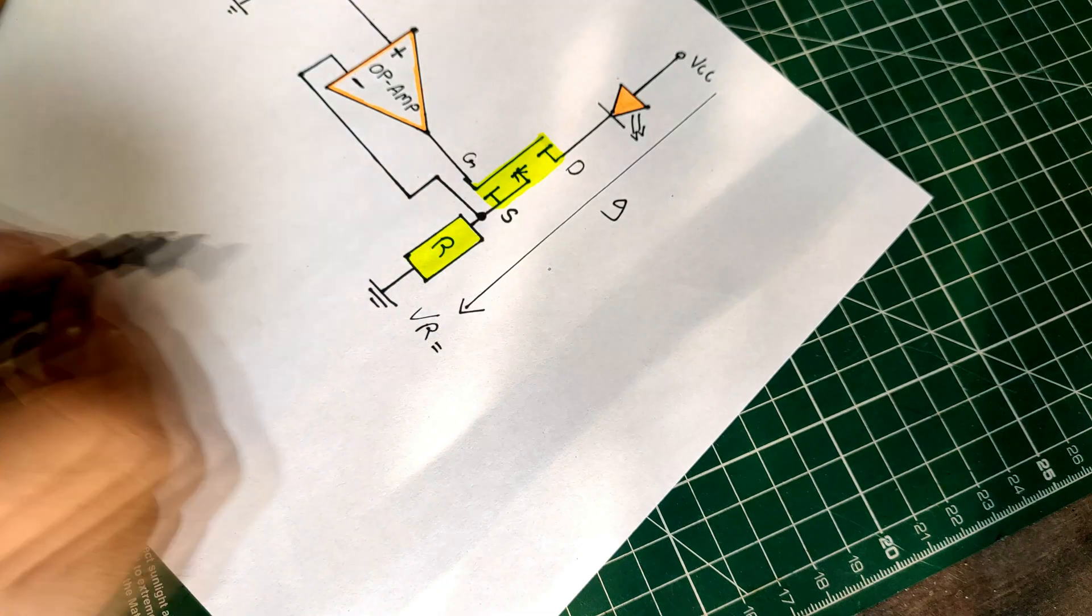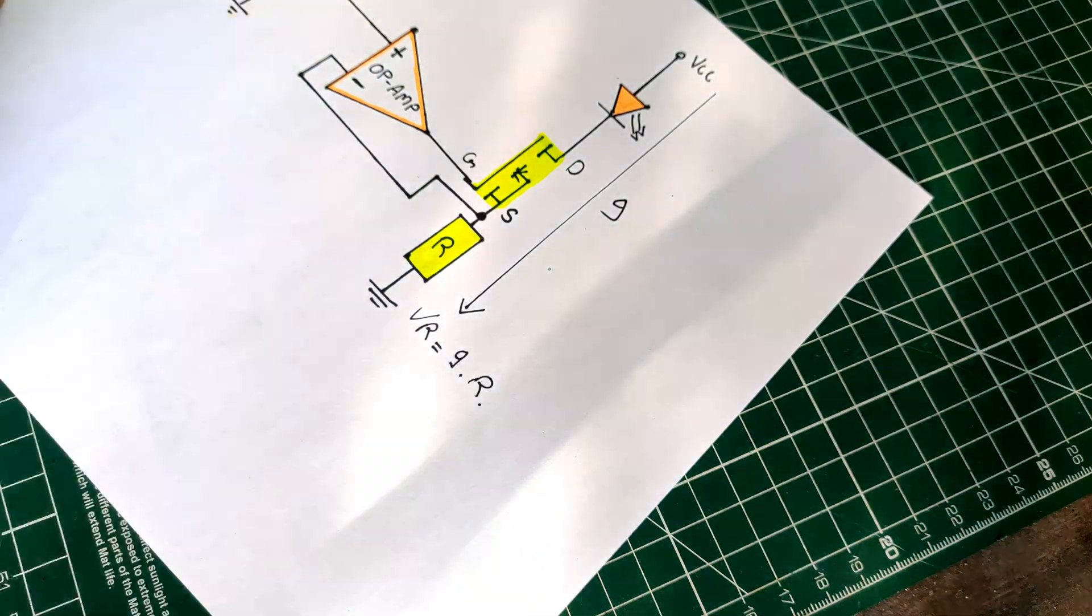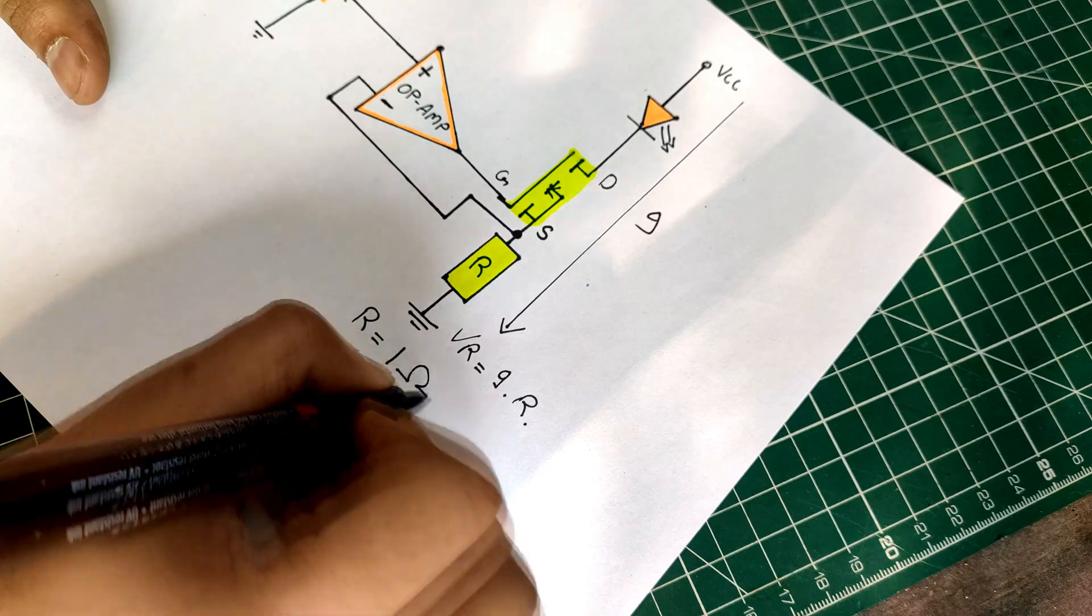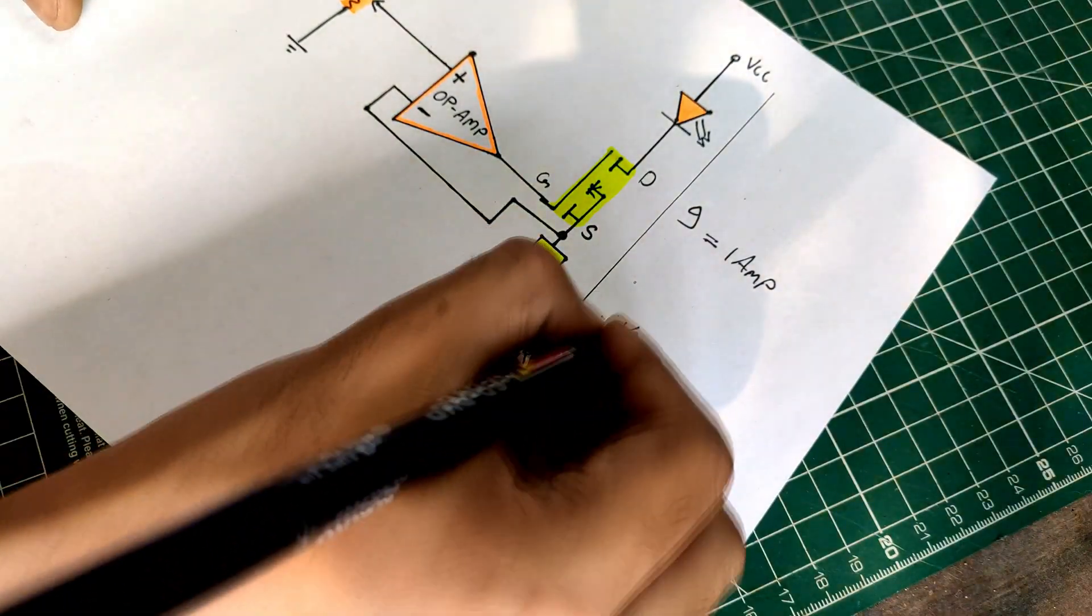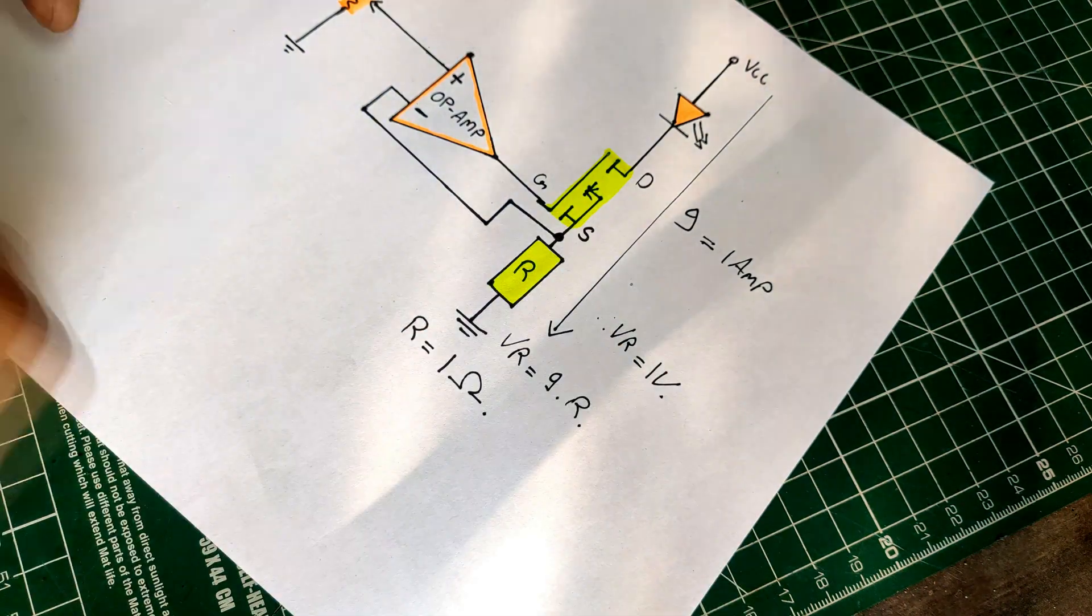Let's see how the current is measured. If the current I is 1 amp, it will be the same through the LED, then through the MOSFET, then through the resistor R as they all are connected in series.